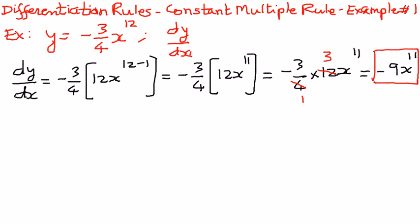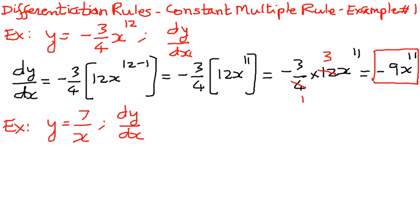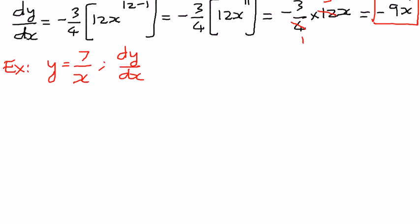Let's take another example. In this example, let us say we have a function y is equal to 7 over x, where x is in the denominator. We want to find the first derivative of that with respect to x, dy by dx. We can rewrite the given function: y is equal to 7 over x. We can bring the x to the numerator and write it as 7x to the power of negative 1.